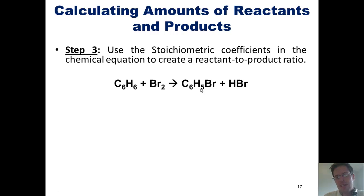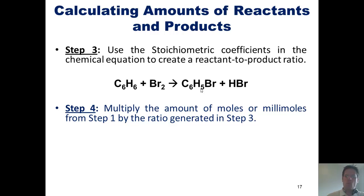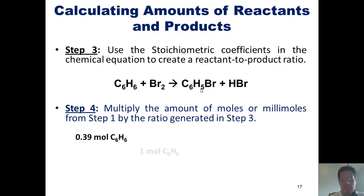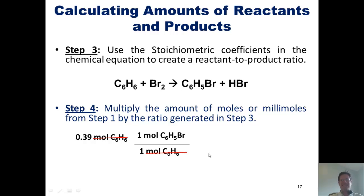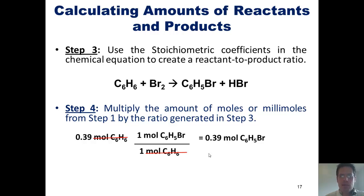That takes us to step four: multiply the amount of moles or millimoles from step two by the ratio we generated in step three. We got 0.39 moles of benzene. Using dimensional analysis, moles of benzene go in the denominator and moles of bromobenzene go in the numerator. The coefficient in front of benzene is 1 and the coefficient in front of bromobenzene is 1, so the reaction occurs in a one-to-one ratio. Thus, 0.39 moles of benzene gives 0.39 moles of bromobenzene.